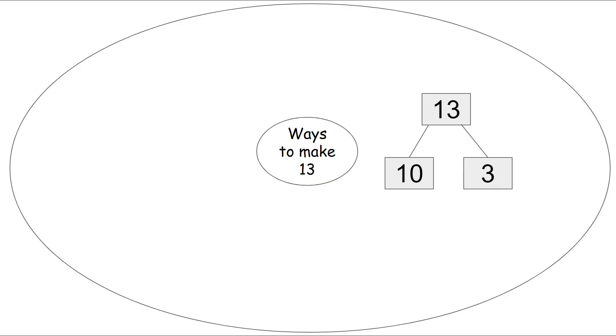If we're using a number bond to make the number 13, our 13 goes on the top because it's our biggest number. And we break it up into 10 and 3. 10 and 3 make 13. We can decompose the number 13 with 10 and 3.